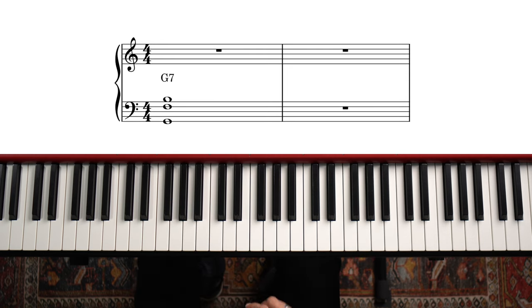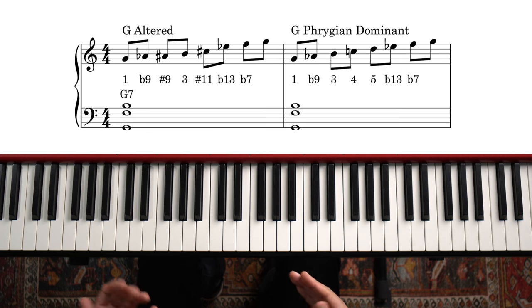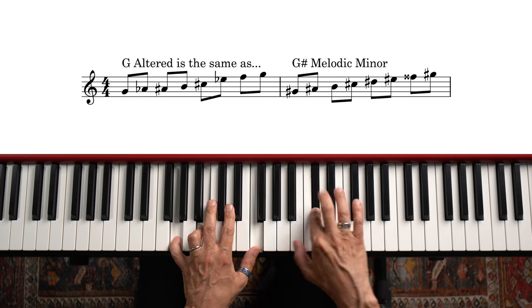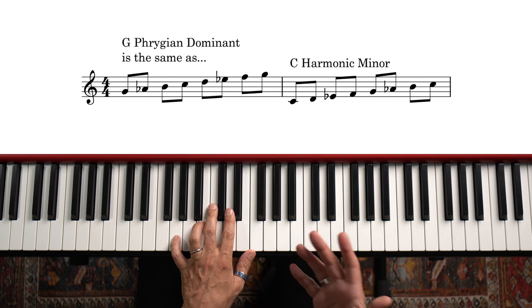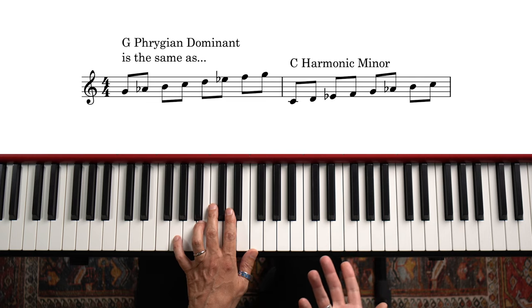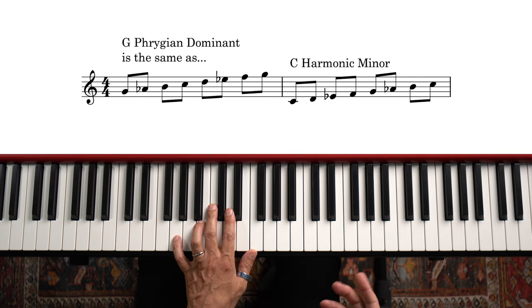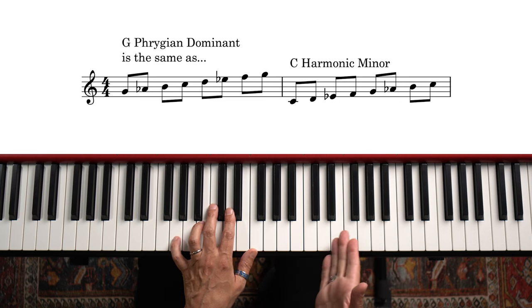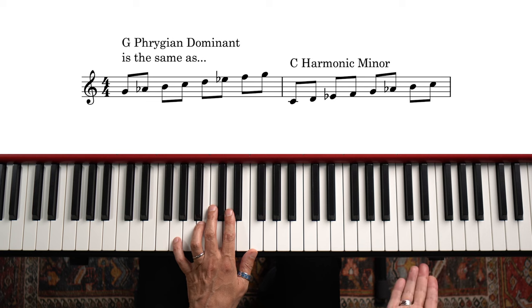And then there's the G7 chord. The most common choices for a V dominant chord in a minor key are the altered and the phrygian dominant scale. Altered is the 7th mode of melodic minor, so G altered is basically a G-sharp melodic minor scale. Phrygian dominant is the 5th mode of harmonic minor, so G phrygian dominant is essentially a C harmonic minor scale. Once again we have overlap between chord scale and key center playing.